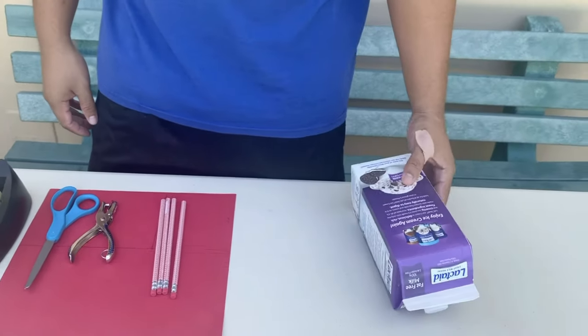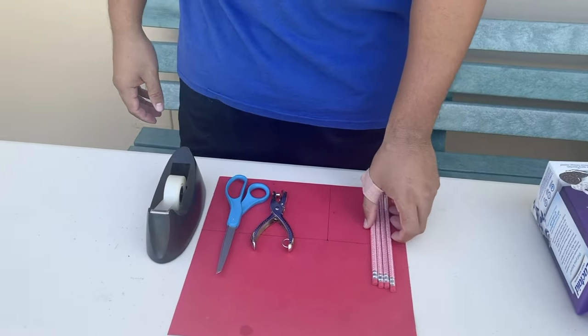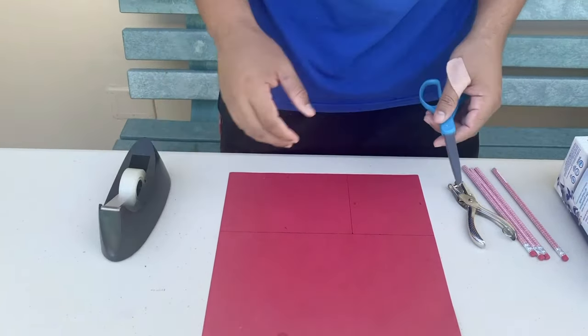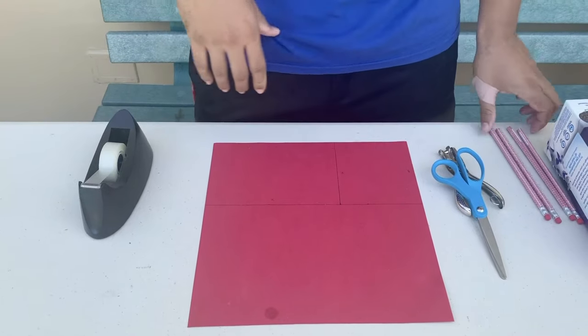Things we're going to need: a milk carton, some pencils or chopsticks, a hole puncher, scissors, tape, and construction paper.